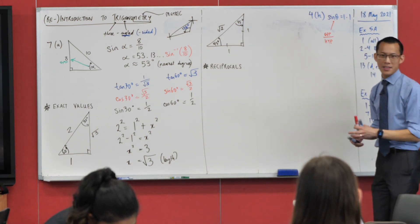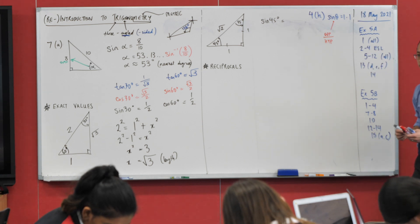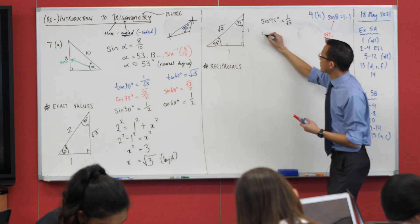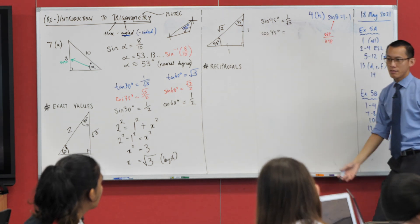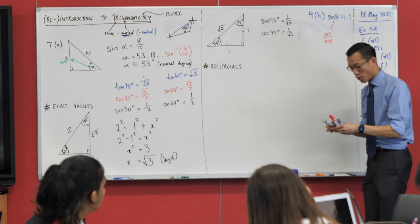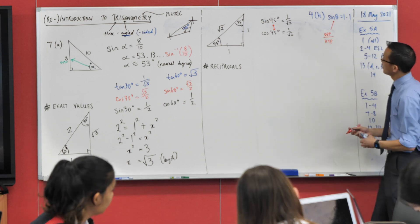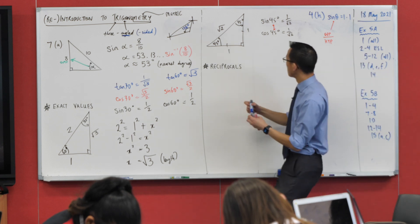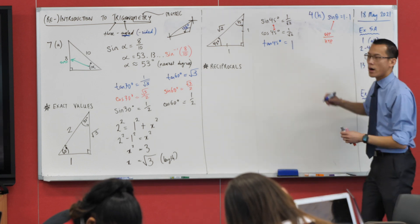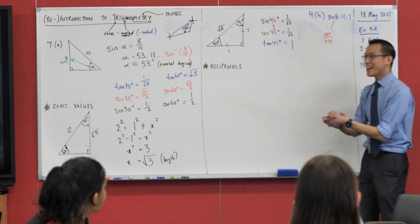Now we can get exact values from this triangle. Sine 45 degrees: opposite over hypotenuse = 1 over √2. Because mathematicians love being lazy, cos 45 is also equal to 1 over √2 — that's because 45° is its own complement, so sine and the complement of sine are the same. And tan 45: opposite over adjacent = 1 over 1 = 1.